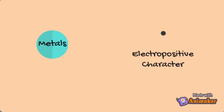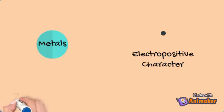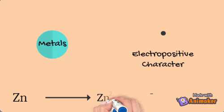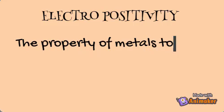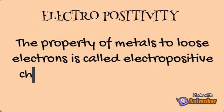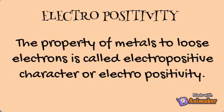Sodium metal can lose one electron to become Sodium ion. Similarly, Zinc can lose two electrons and become Zinc ion. Thus Electropositivity is defined as the property of metals to lose electrons. The more easily a metal loses electrons, the more Electropositive it is, because it becomes more and more Electropositive.